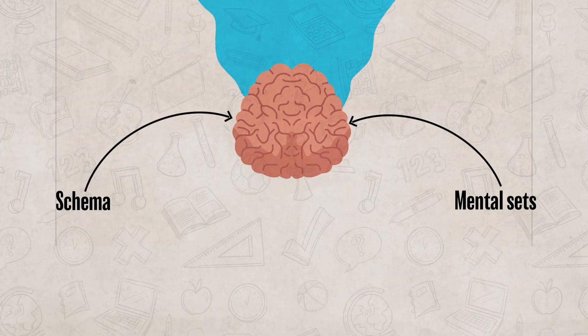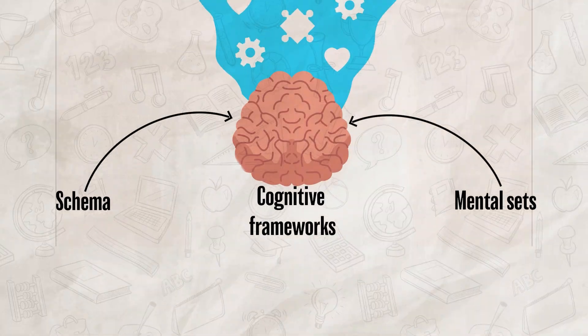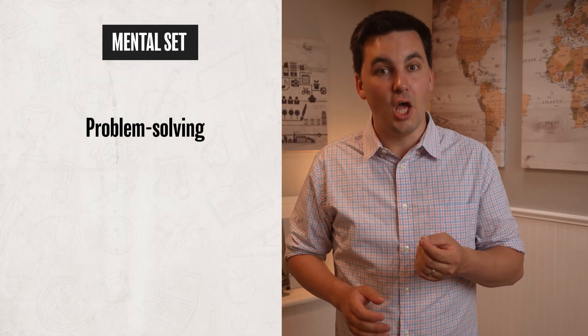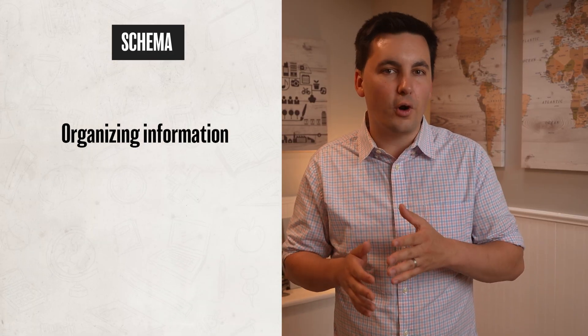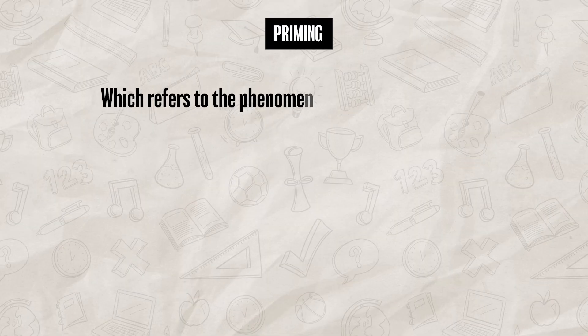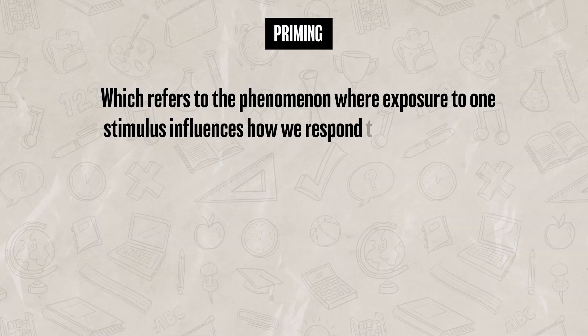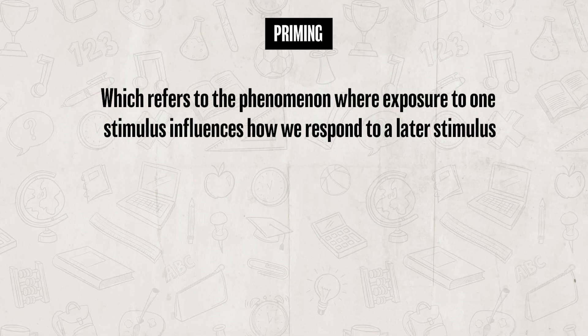Don't get a mental set confused with a schema. Both mental sets and schemas are cognitive frameworks, but they serve different purposes. A mental set is specific to problem solving, while a schema is focused on organizing information. Speaking of using past information to tackle current challenges, we also need to talk about priming, which refers to the phenomenon where exposure to one stimulus actually influences how we respond to a later stimulus.